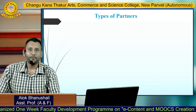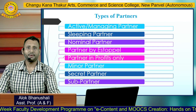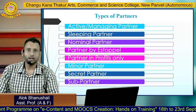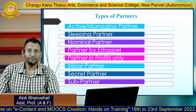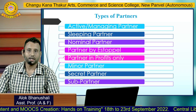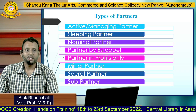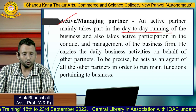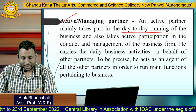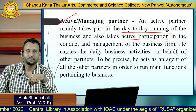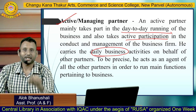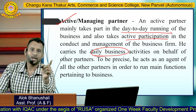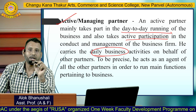Partners are of many types. The types we are covering are: active partner, sleeping partner, nominal partner, partner by estoppel, partners in profit only, minor partner, secret partner, and subpartner. An active managing partner mainly takes part in the day-to-day running of the business and also takes active participation in the conduct and management of the firm. He carries out daily business activities on behalf of other partners and acts as an agent of all other partners to run the main functions pertaining to the business.